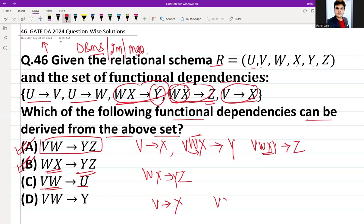Option C: VW derive U. So we can derive only X. Using V and X and W, can we derive U? But U is not anywhere in the right-hand part. Thus option C is not possible.